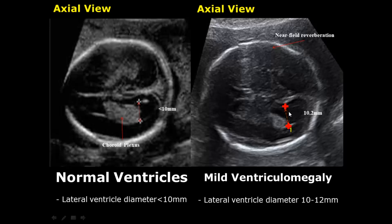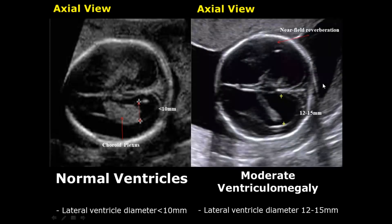Over here the lateral ventricle diameter is more than 10 millimeters. If the diameter is between 10 to 12 millimeters, it is termed mild ventriculomegaly. We do not see the near side clearly because of the near-field reverberation artifact, which occurs due to the skull bone — the ultrasound beam has higher energy in that area, causing large reflections. In moderate ventriculomegaly, the size of the lateral ventricles is between 12 to 15 millimeters.